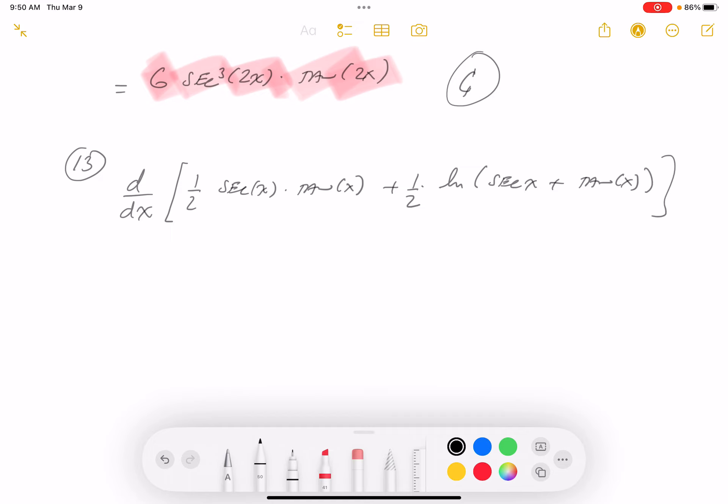I notice there's a constant multiple that I can pull out pretty quickly, so it's going to be one-half times this nightmarish-looking derivative. I'll start with things that look pretty easy to do first. The derivative of the natural log is going to be one over its argument.